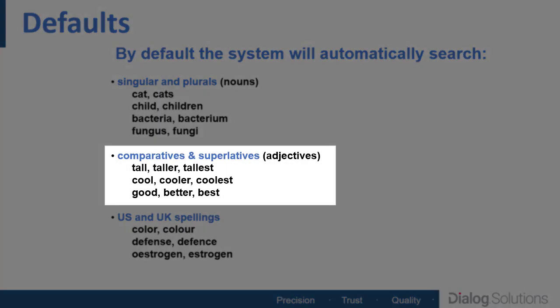With adjectives, such as tall or cool, Dialog will automatically expand your search to include the comparative and superlative forms. So if you type in a search for tall, you'll also get records with taller or tallest. The same with cool, cooler, coolest. By the way, another example you might not think of is good, better, best. If you search for good, you'll also get better and best.